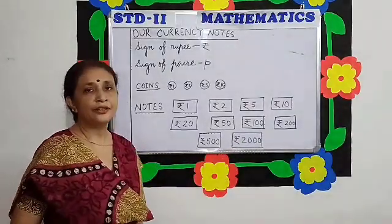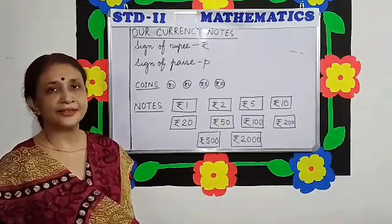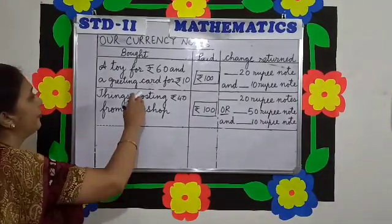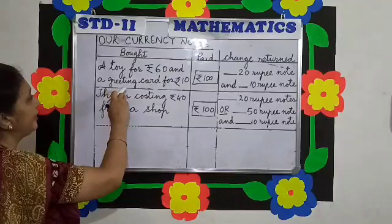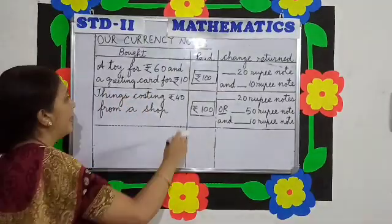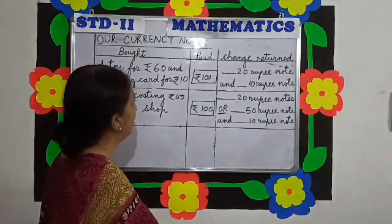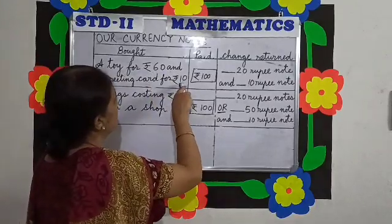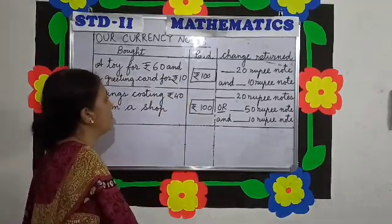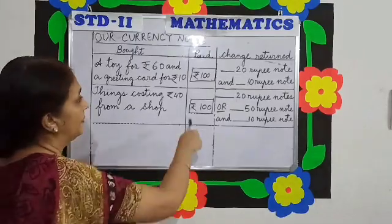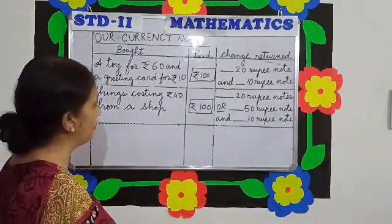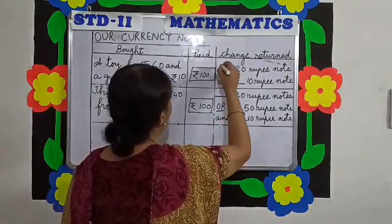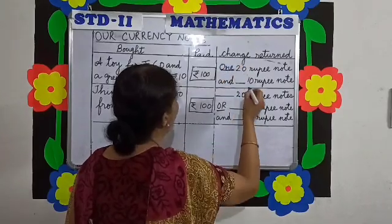Now we begin some exercises. If we go to a shop and buy a toy for Rs. 60 and a greeting card for Rs. 10, and you pay the shopkeeper Rs. 100, how much money are you going to get back? Rs. 60 plus Rs. 10 is equal to Rs. 70, and you have paid the shopkeeper Rs. 100. The shopkeeper will return you Rs. 30 — one Rs. 20 and one Rs. 10.